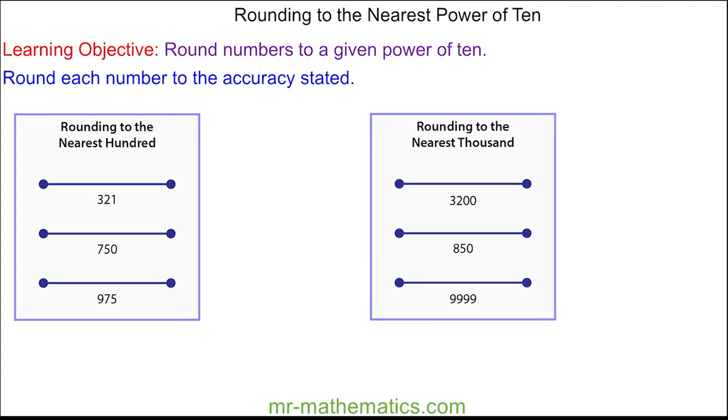So now we're going to round 321 to the nearest 100. We can see it is between 300 and 400. And because it is nearer to 300, we round it to 300.